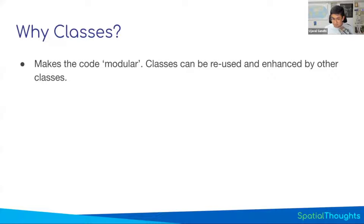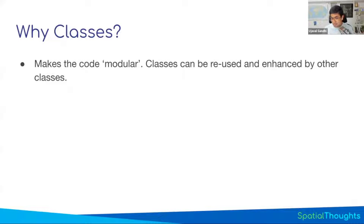Instead of doing that, you can say I have a class which defines what a point is. A line takes this class and says I want to enhance the functionality — I want to put multiple point classes together to form a line class, and so on. Now you are able to write your code, reuse it in modules, and build on top of each other.